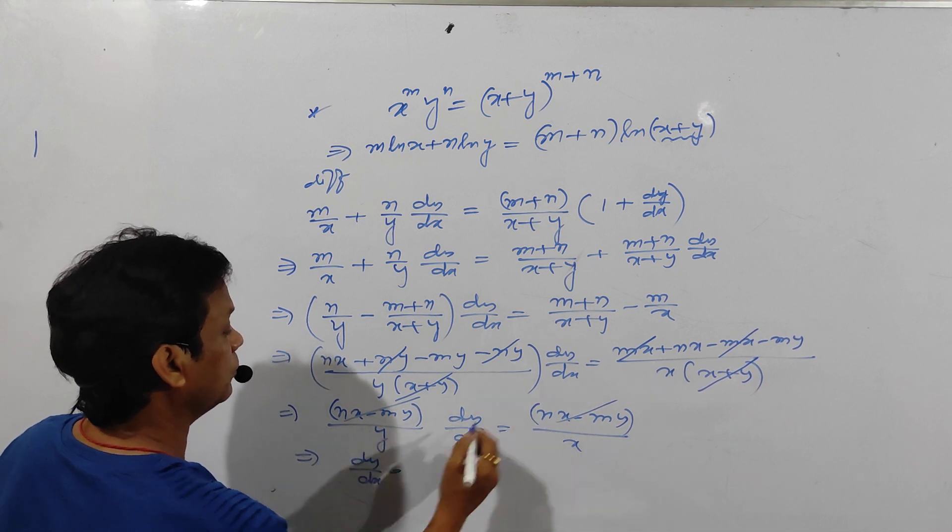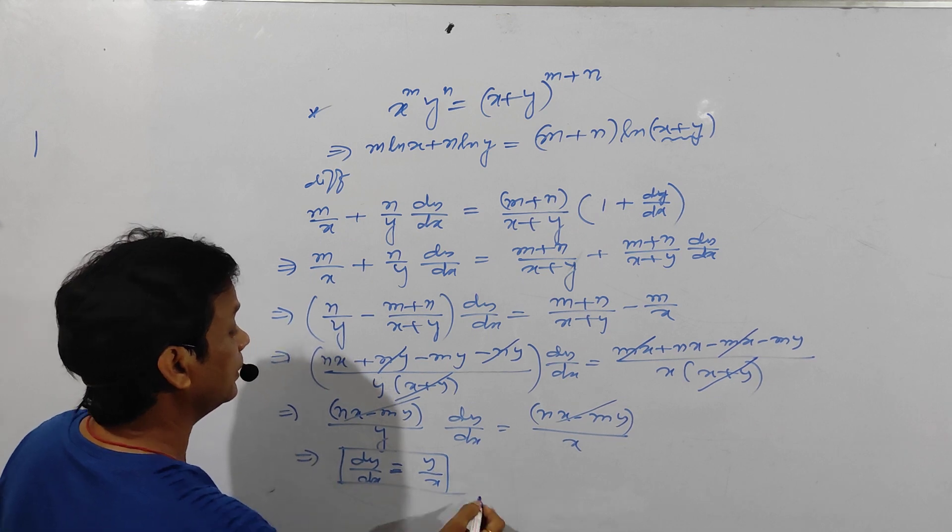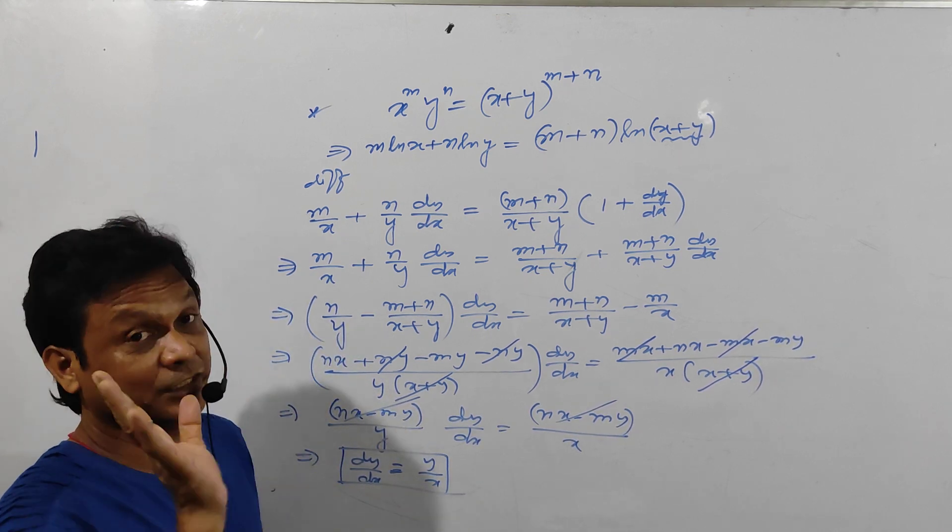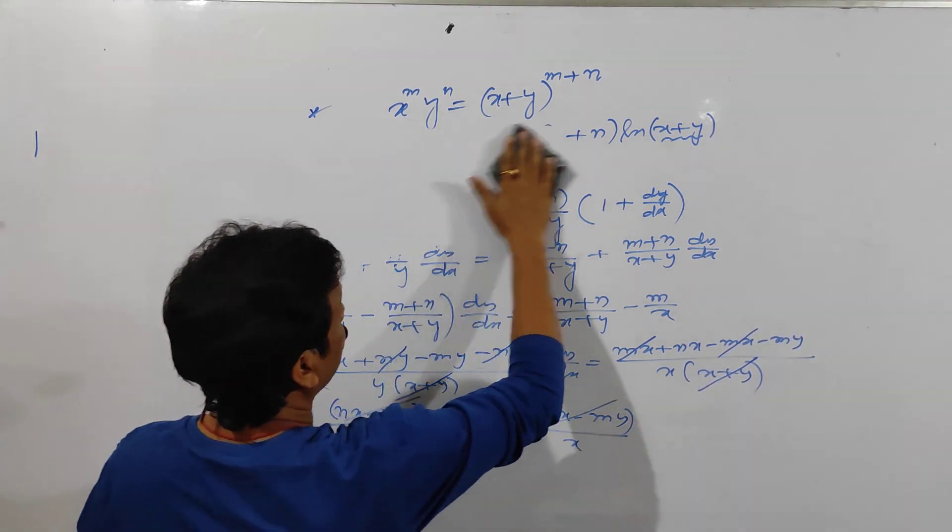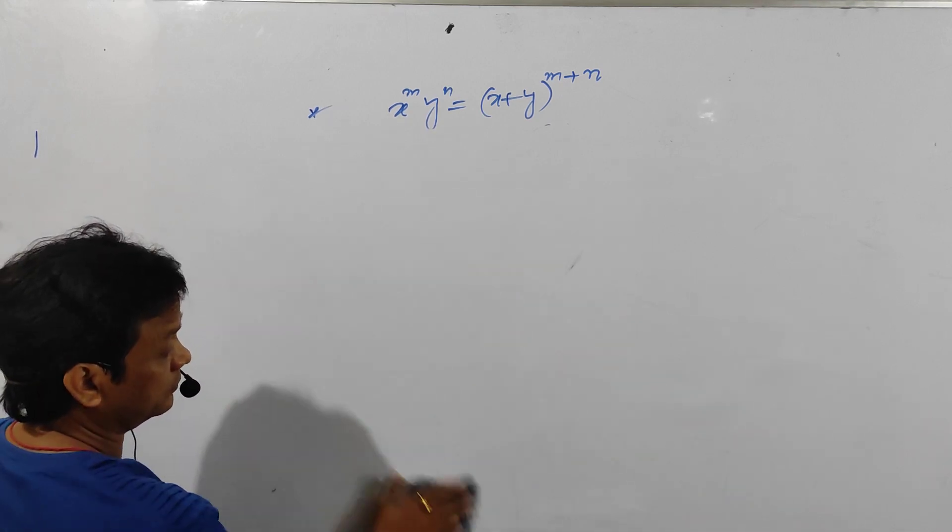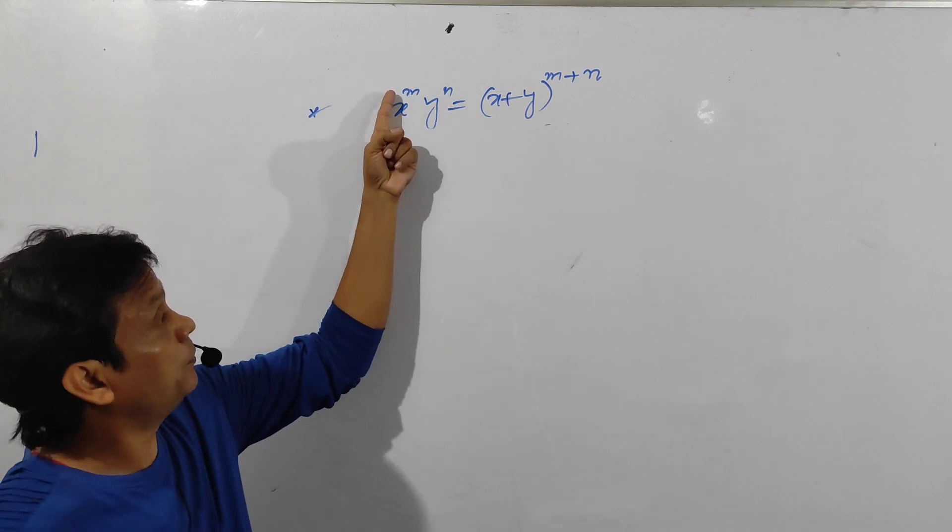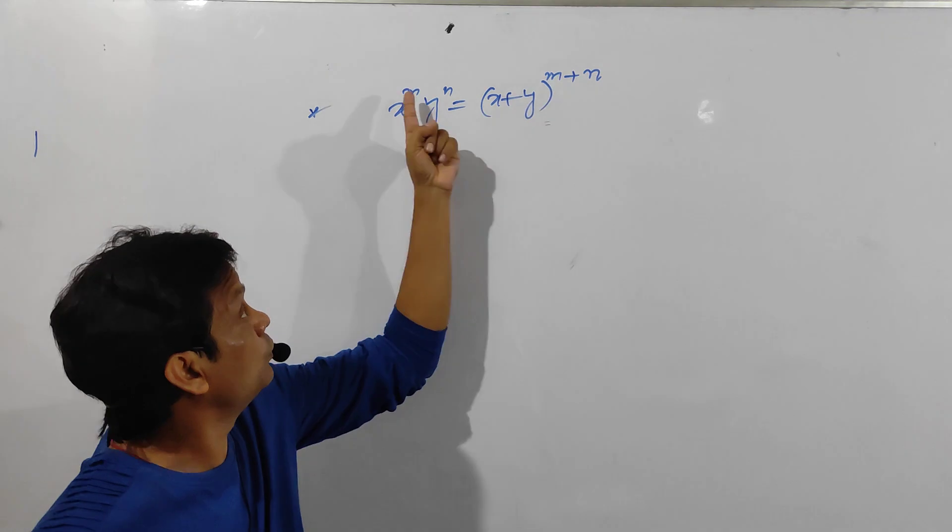Here, now what is the restriction in this formula? See, now already you have known that the answer is y by x. Here the power of x is n, the power of y is n, and the power of x plus y should be the sum of these two, clear.